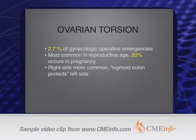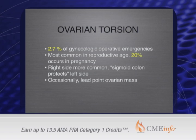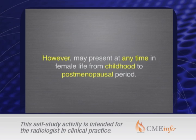The sigmoid colon is supposed to protect the left side. Occasionally there is a lead point such as ovarian masses — dermoids being most common — but sometimes in younger reproductive age patients, follicles and physiologic cysts can lead to torsion. Ovarian torsion may present at any time in a female's life, from childhood to the postmenopausal period.